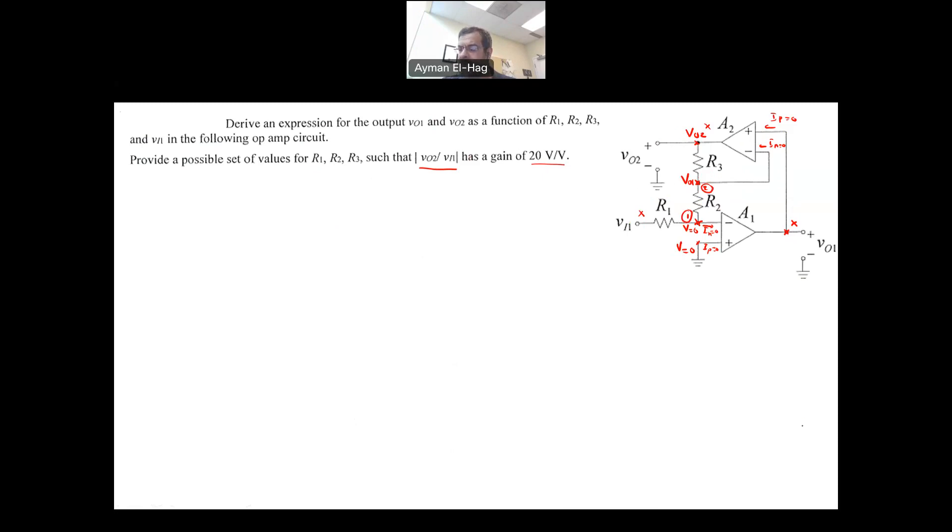So let's start. We'll apply KCL to node number 1. Now, we will assume the currents and direction. I usually assume them leaving. So the current going this way, this way, and the current going into the op-amp is equal to 0 because this is an ideal op-amp. So basically, I have two currents only.